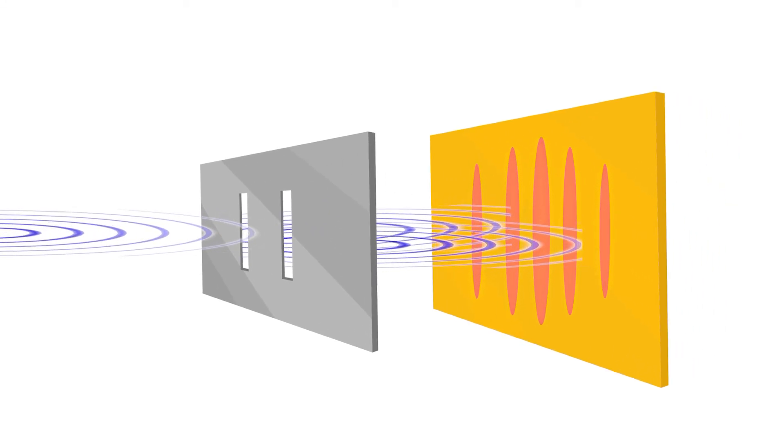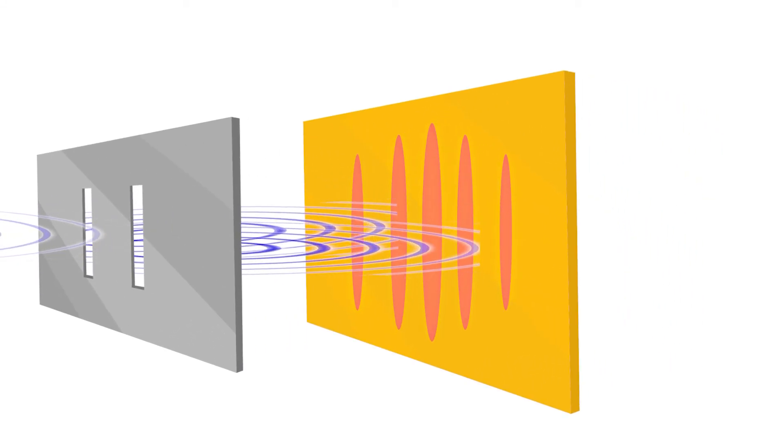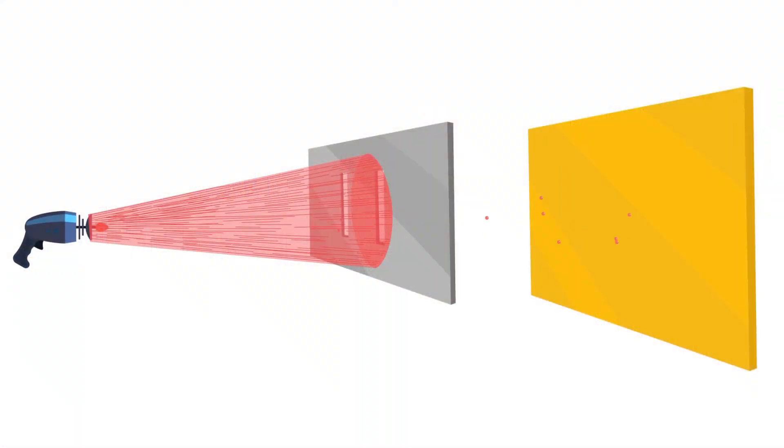In this case, the target would show what's known as an interference pattern. This is a pretty simple and quite clear method to solve this argument. When it was done with light, an interference pattern showed up, and the debate about light was over. It was obviously a wave.